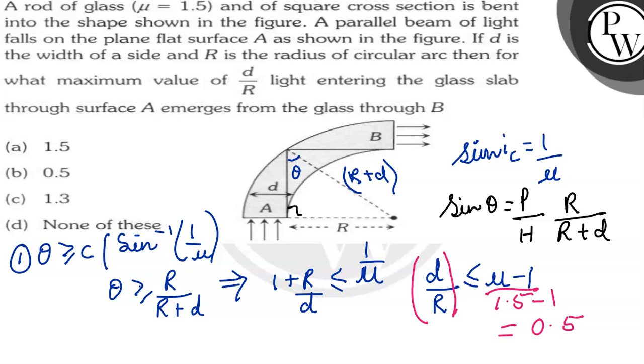So which option is correct? Yes option B is correct. The maximum value of D by R is 0.5. This is the answer. Hope you understood it well, all the best.